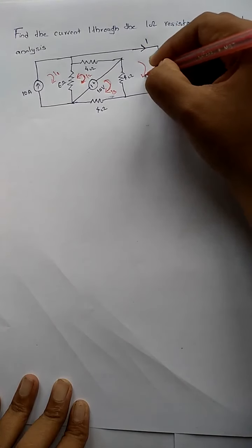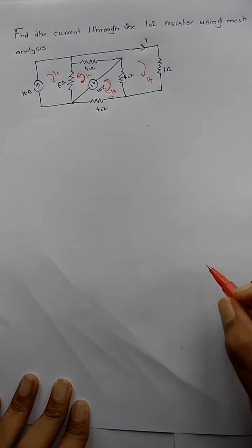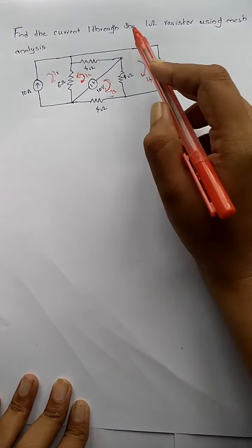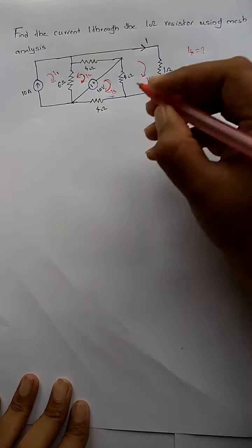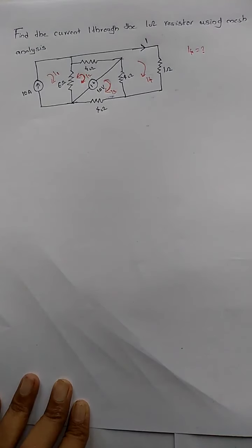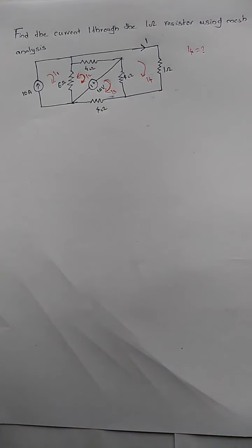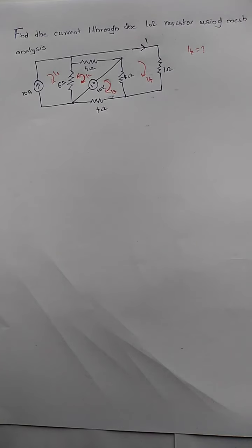In our question, we have to find out the current I through the one-ohm resistor, which is I4. So in the first step we have analyzed the circuit, found all the meshes, assigned a current to each mesh, and given a direction to each mesh current.